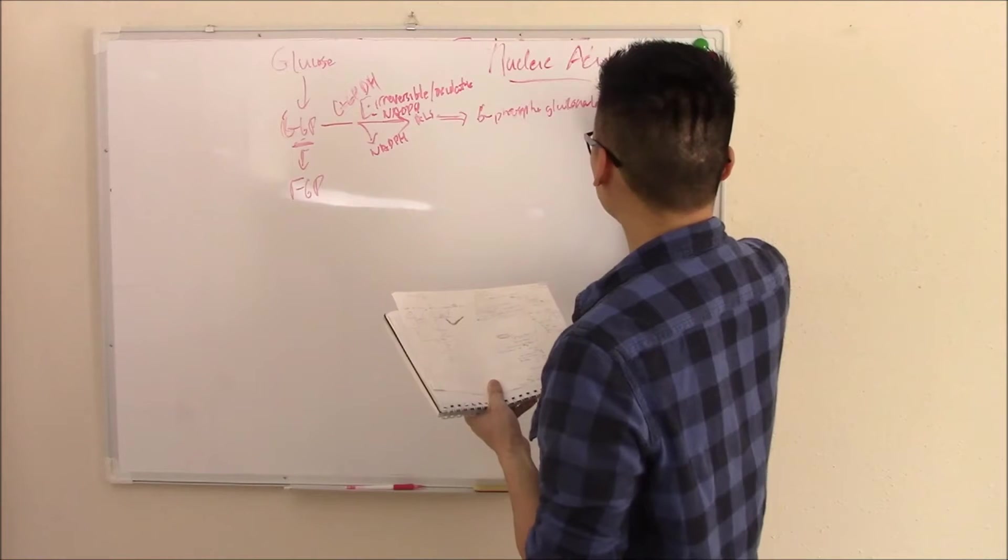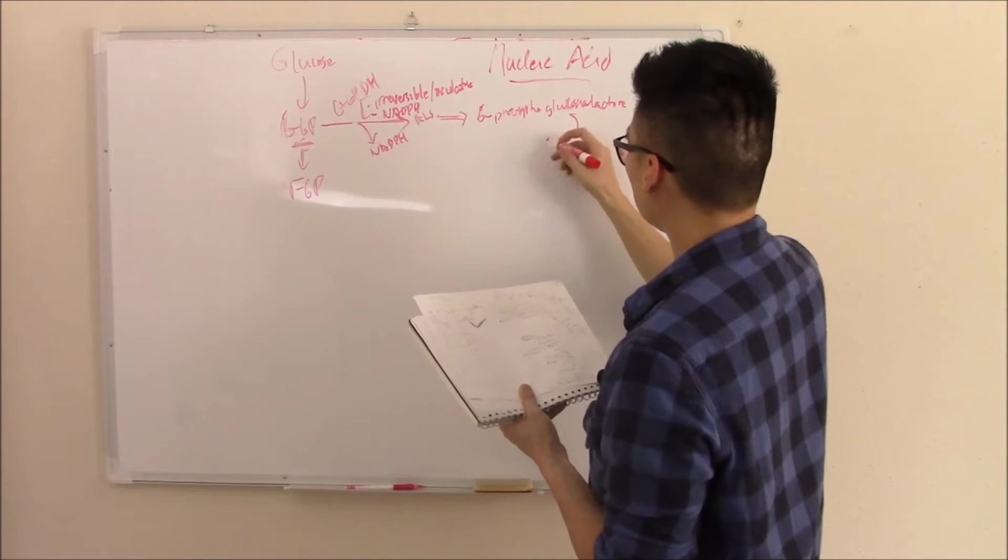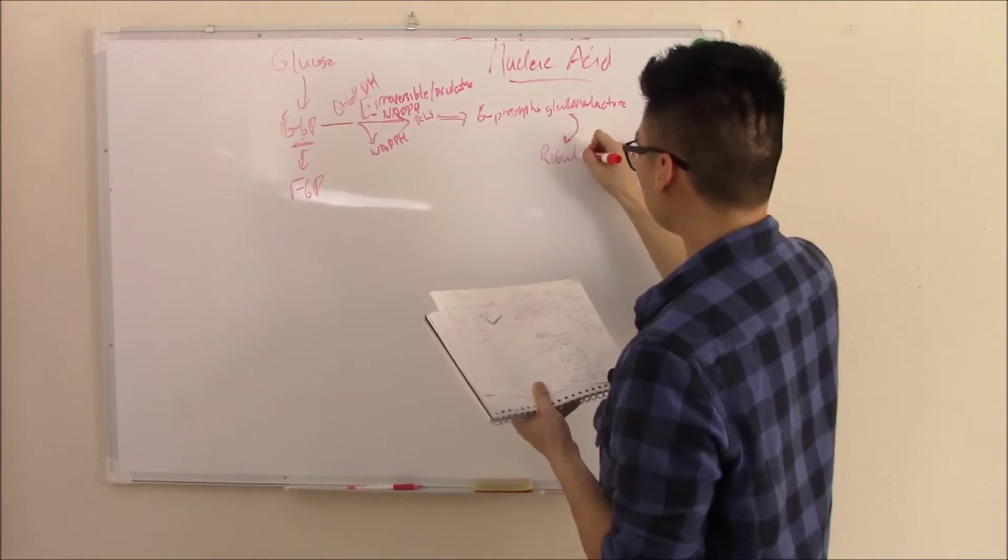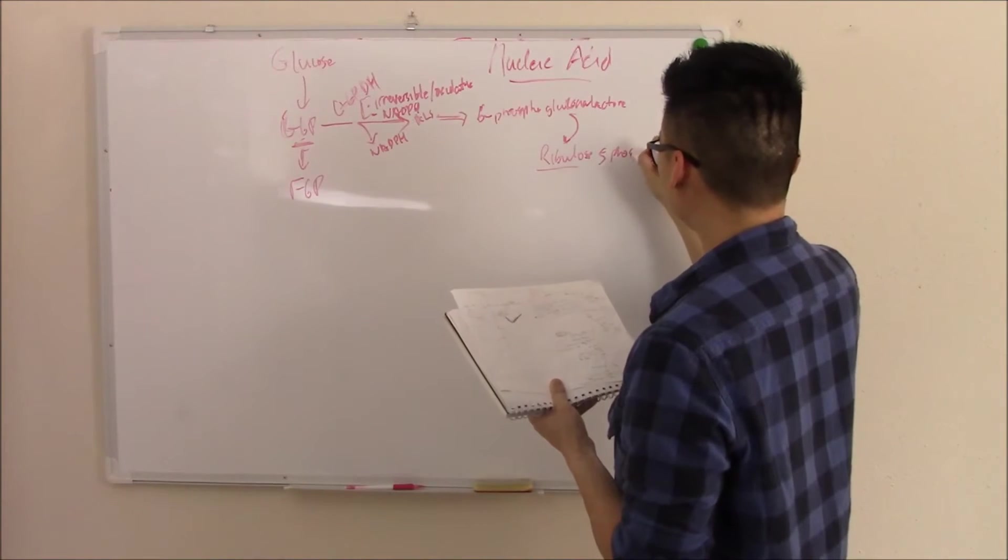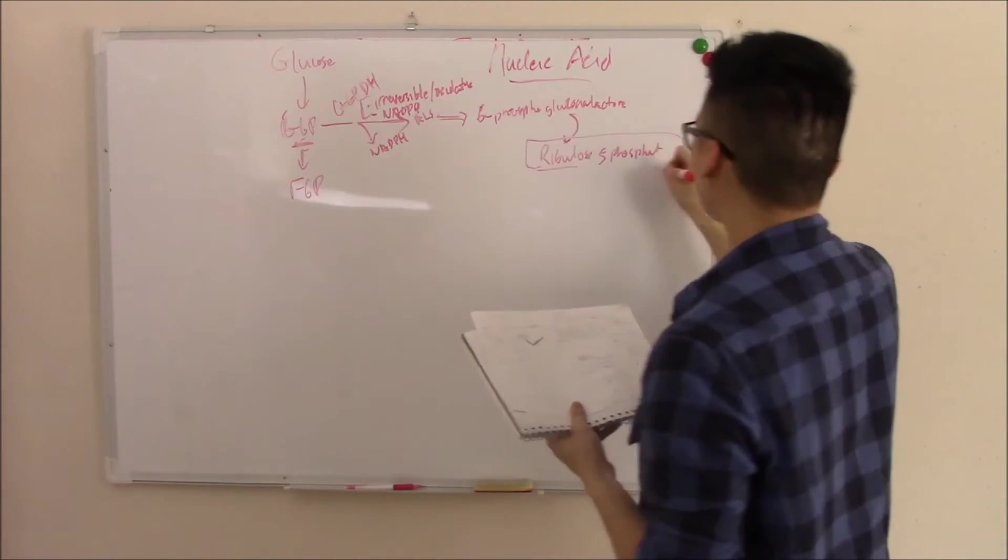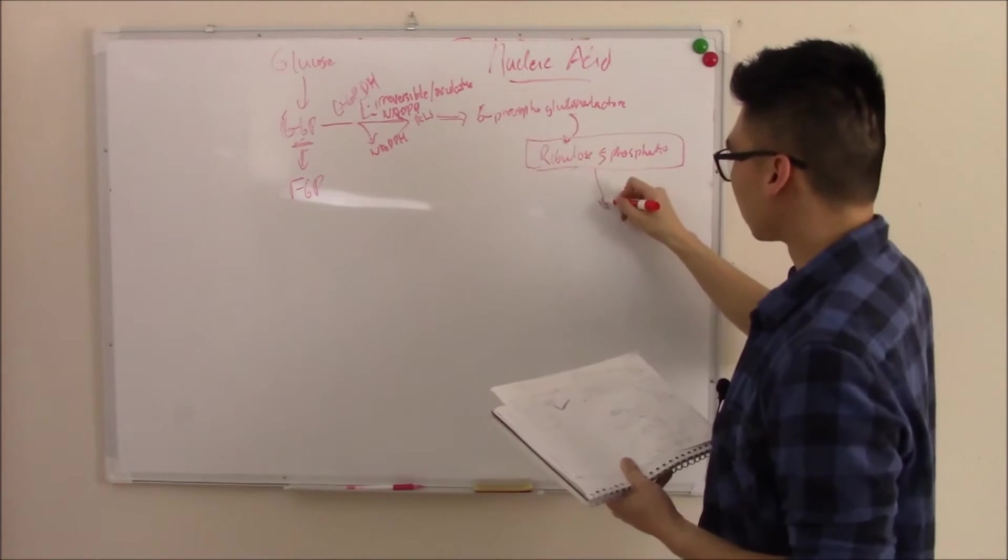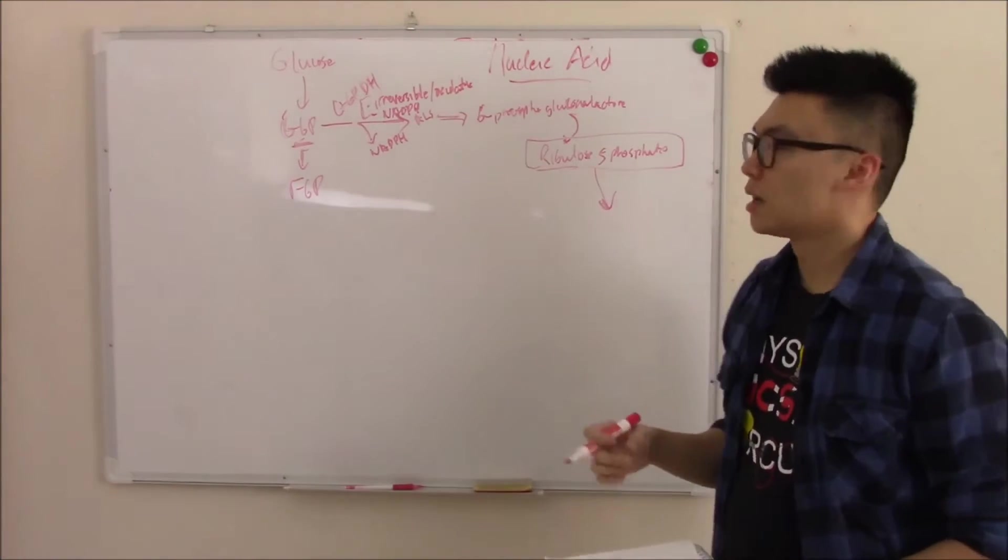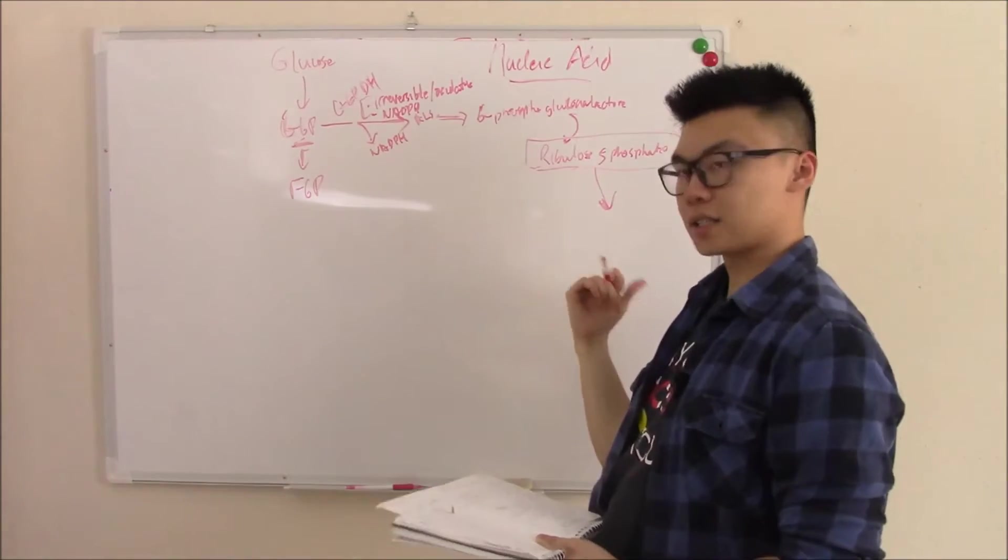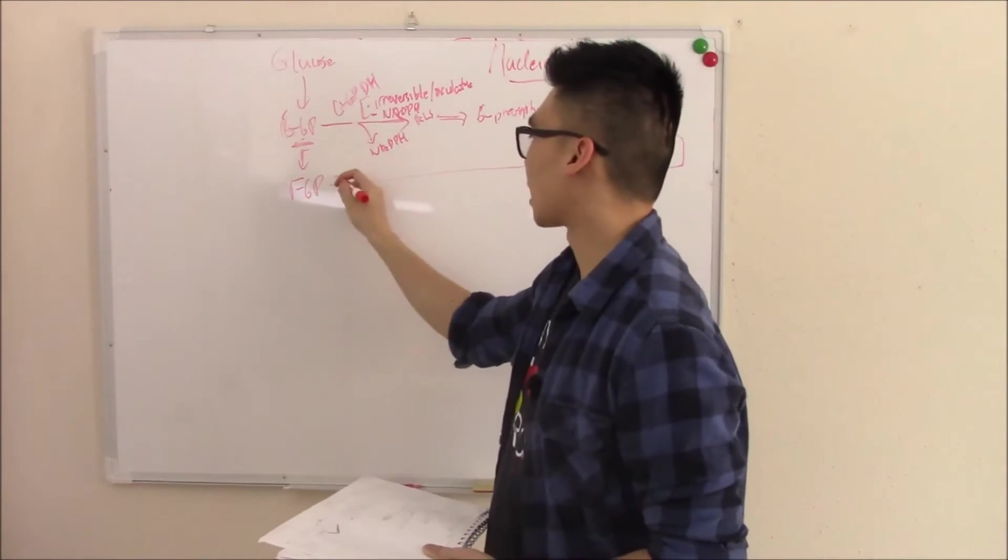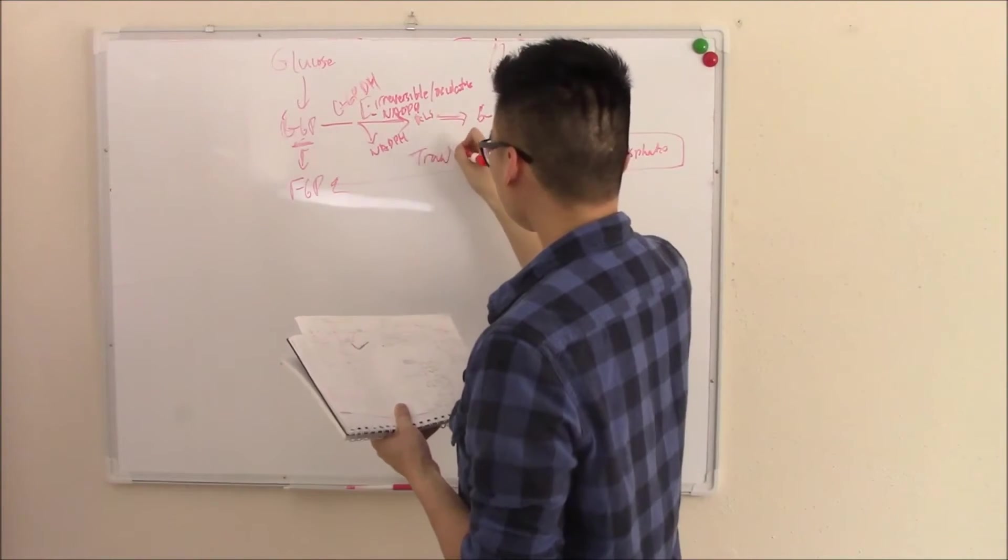So that turns glucose 6-phosphate into 6-phosphogluconolactone, which goes on to make your purines and pyrimidines. However, before we get into that, I just want to show you that if you don't want to go into that just yet, you can enter it back into the cycle through transketolase.